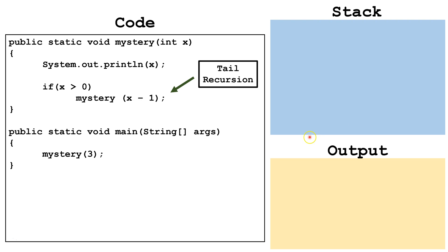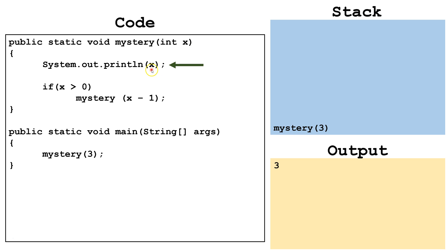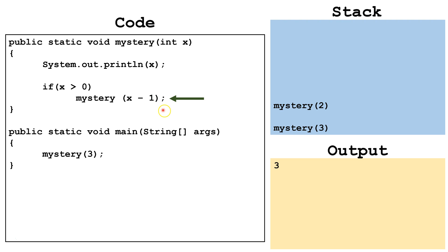Now let's look at an example of tail recursion. This is pretty much the same program, except the recursive call is at the tail of the method, and we have some other processing at the beginning. We start by calling mystery(3) and put that on the stack. The 3 goes into the x parameter. Then we print off the x value, which is 3, so we output 3. Then we check: is x greater than 0? It is. So we make another call to mystery(x minus 1), calling mystery(2) and putting that on the stack.